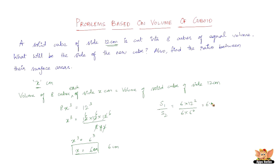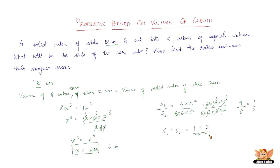So the ratio is 6 × 12 × 12 divided by 6 × 6 × 6, which simplifies to 4. Since there are 8 new cubes, we include the 8, giving 4 by 8, which is 1 by 2. The ratio S1 to S2 is 1 is to 2. So the surface area of the newly formed 8 cubes is greater than that of the original solid cube of side 12 cm. Hence the required ratio is 1 is to 2.